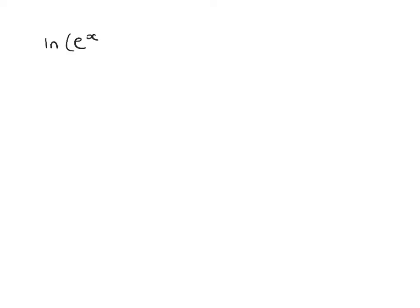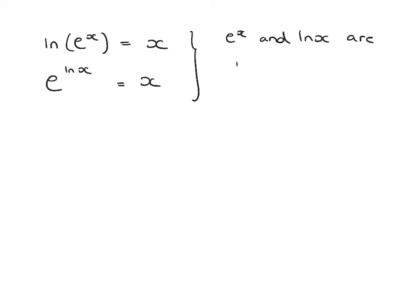It's worth remembering that ln of e to the power of x gives us x, and e to the power of ln x gives us x as well. E to the x and ln of x are inverse functions of each other — they are each other's inverse.